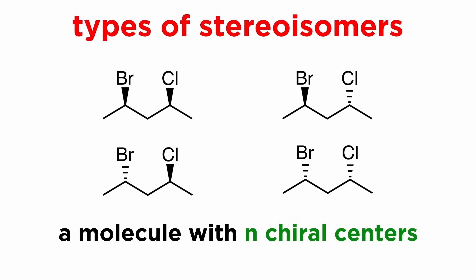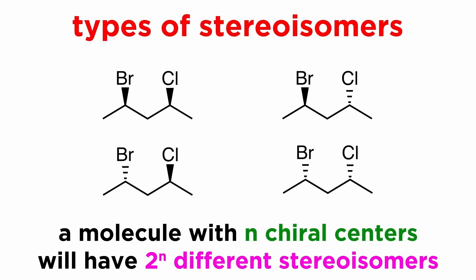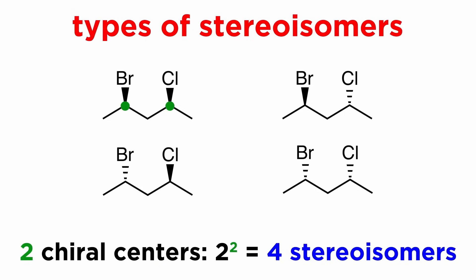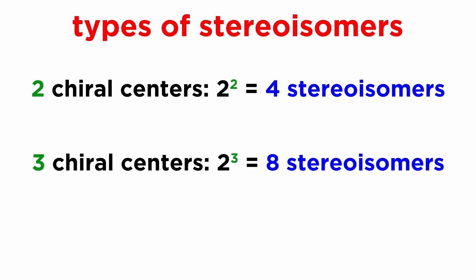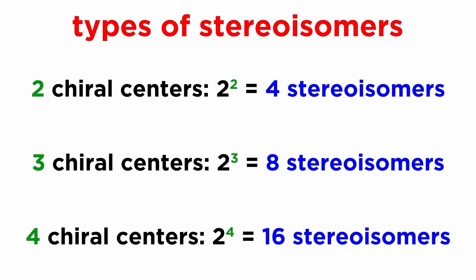We must understand that if a molecule has n chiral centers, it will have 2^n stereoisomers. So for two chiral centers, we got these four. With three chiral centers, we would get eight. With four, we get 16, and so forth. This is because there are more and more possible combinations of dash and wedge bonds.